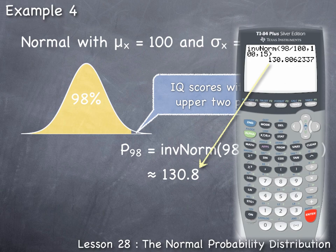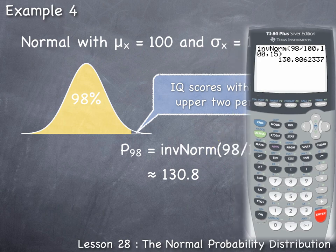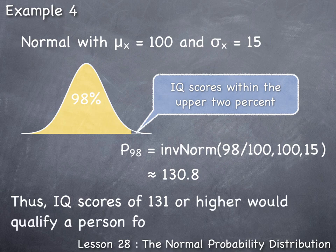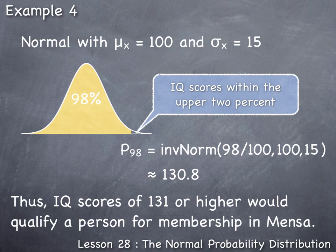Now we have our result: people who have IQ scores above 130.8 are eligible for membership in Mensa. But typically, individuals are not given decimal versions of their IQ score—it's usually rounded to whole values. Thus, IQ scores of 131 or higher would qualify a person for membership in Mensa.